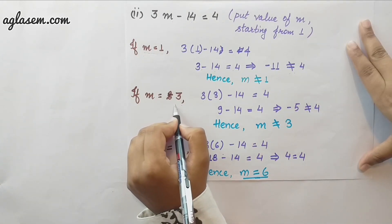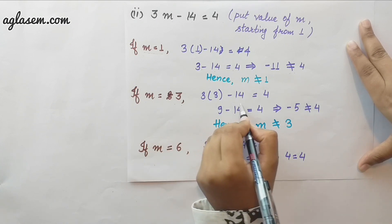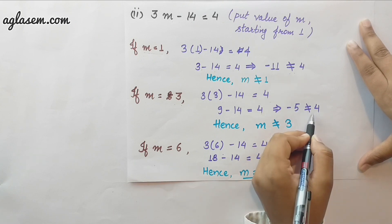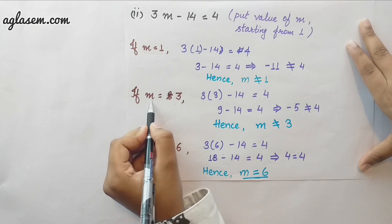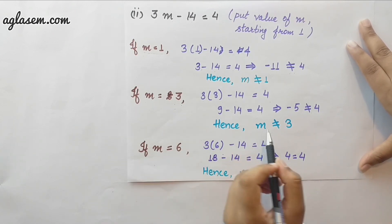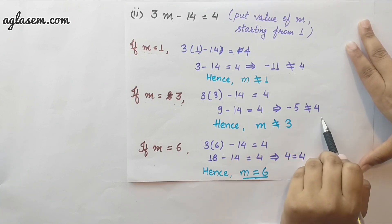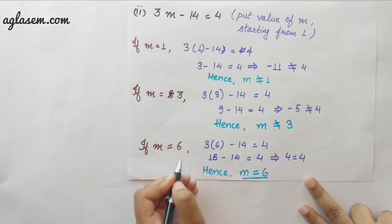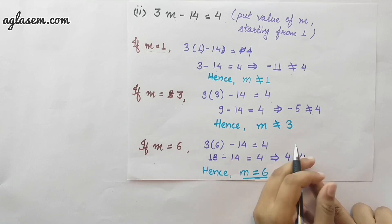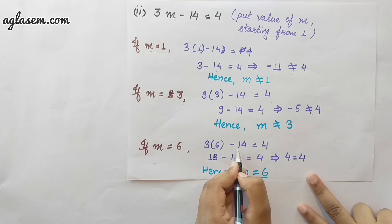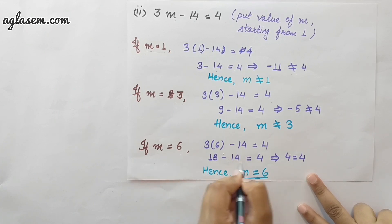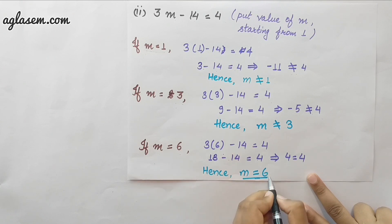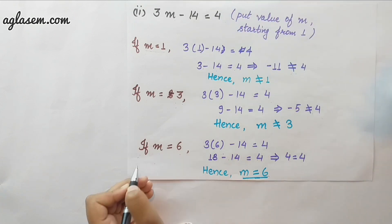For m equals to 3: 3 into 3 minus 14 gives 9 minus 14 equals minus 5, which is not equal to 4. For m equals to 6: 3 into 6 minus 14 gives 18 minus 14 equals 4. 4 is equal to 4, therefore m equals 6 satisfies the equation. The answer is m equals 6.